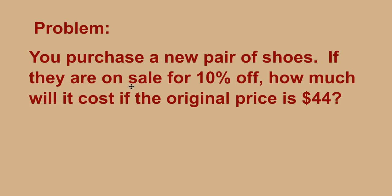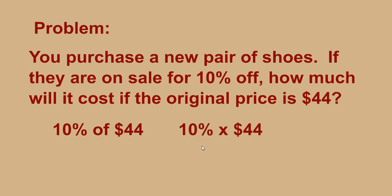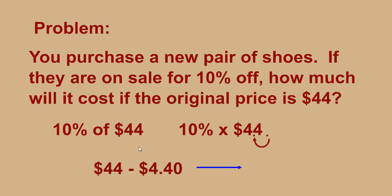Now let's return to the first problem: you purchase a new pair of shoes on sale for 10% off — how much will it cost if the original price is $44? Using the 10% rule, instead of multiplying, you can simply move the decimal one place to the left. Moving the decimal one place to the left on $44 gives us $4.40 — that is the value of 10%.